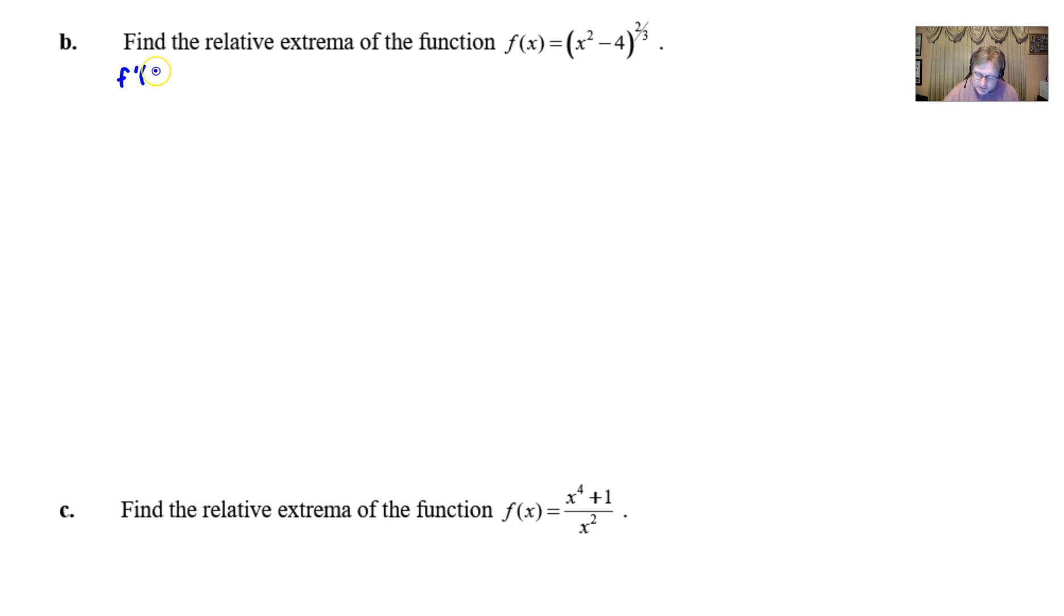Our first step as always is to take the derivative. This derivative is going to give us 2/3 out in front multiplied by (x² - 4) to the negative 1/3 power, and then we multiply by 2x—we're using the chain rule. Chain rule is never going to go away; you always want to have a strong command over the chain rule. If we simplify this, the numerator becomes 4x, the denominator is 3 times the cube root of (x² - 4), and that's really as simple as you can make this look.